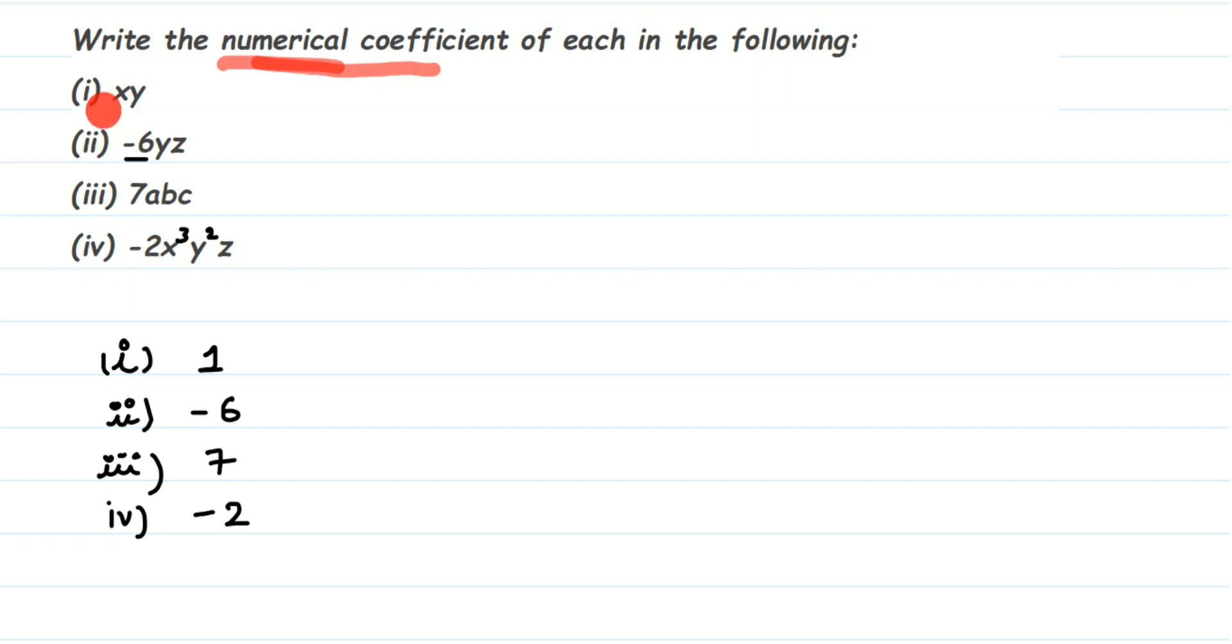Normally one is not written—it's omitted—but we have to write it down. I hope this question is clear: how to write down the numerical coefficient. It's simple. You start with the number—what you see, write it down along with the sign.